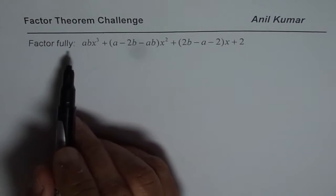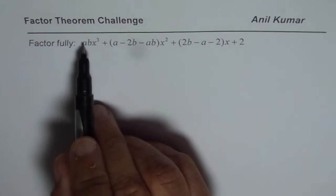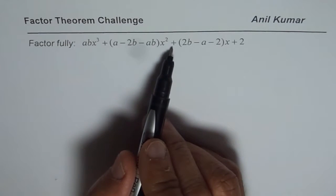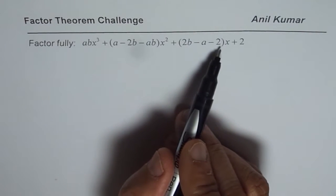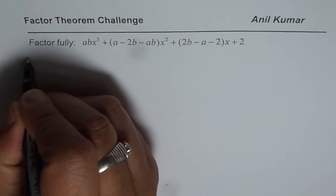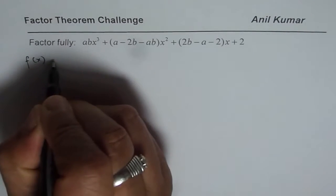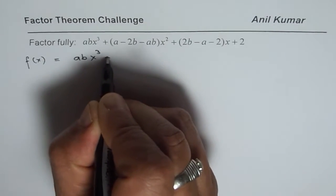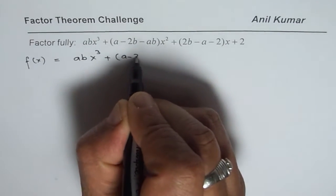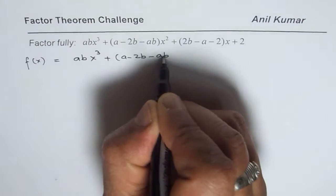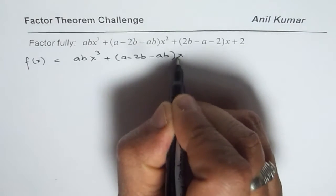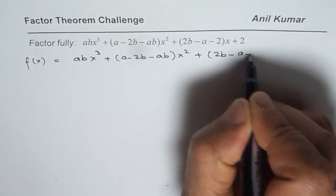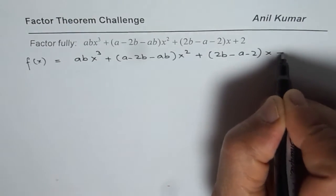We need to factor the expression abx³ + (a − 2b − ab)x² + (2b − a − 2)x + 2. Let us write this as a function f(x) = abx³ + (a − 2b − ab)x² + (2b − a − 2)x + 2.